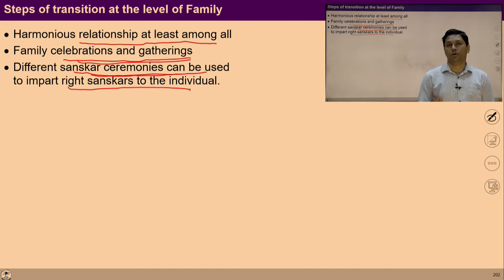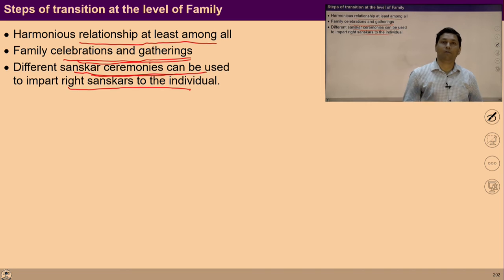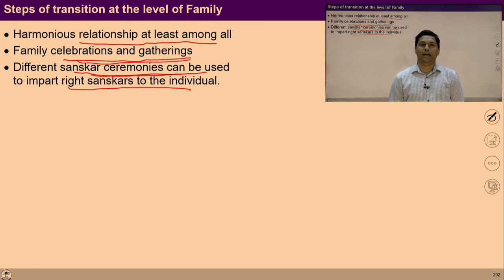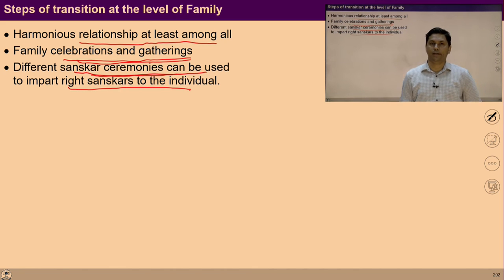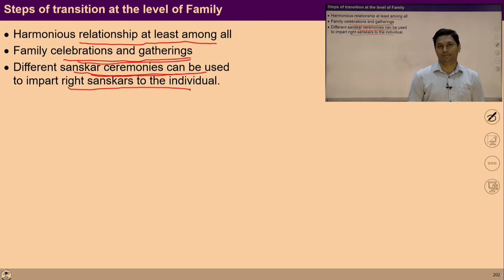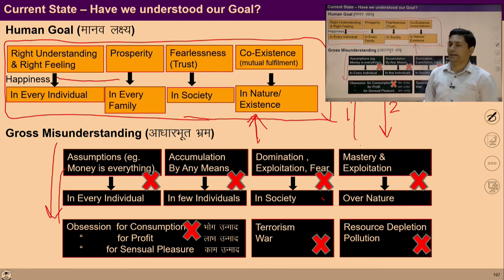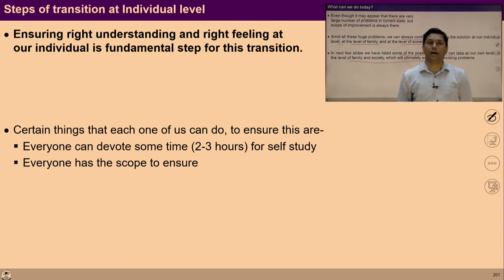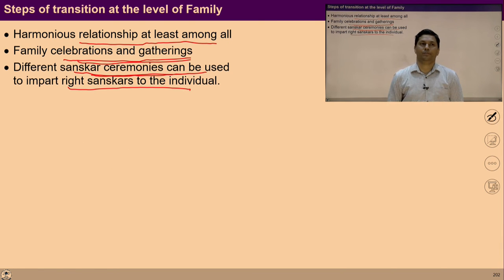Take a pause and think: do you make efforts at the level of family? What kind of efforts can you make for the welfare of society? Ask these questions to your family members and make a road map — what can we do in the next few months or one year for the welfare of society? With right understanding and right feeling in every individual and prosperity in every family, we can think of our participation as individuals and as family members for the welfare of society.